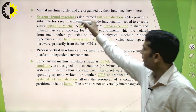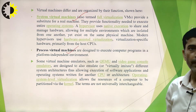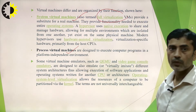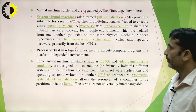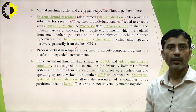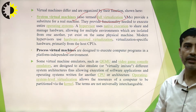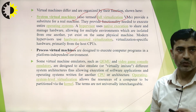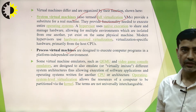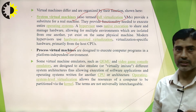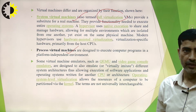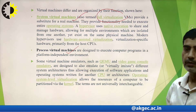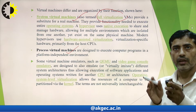Virtual machines can be categorized in two ways: system virtual machines and process virtual machines. A system virtual machine uses full virtualization and provides a substitute for a real machine. It provides the functionality needed to execute entire operating systems. A hypervisor uses native execution to share and manage hardware, allowing multiple isolated environments to exist on the same physical machine. Modern hypervisors use hardware-assisted virtualization, primarily leveraging the host CPU.